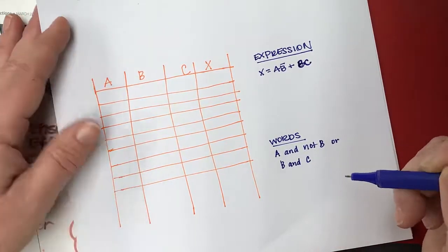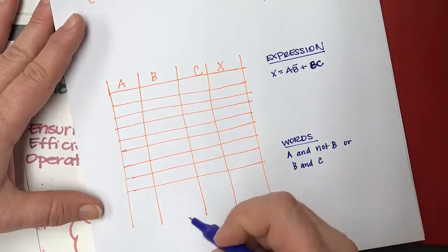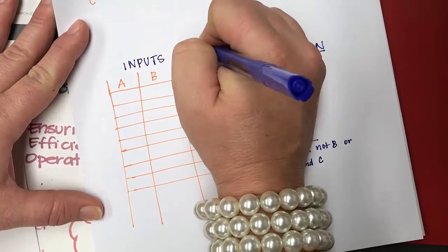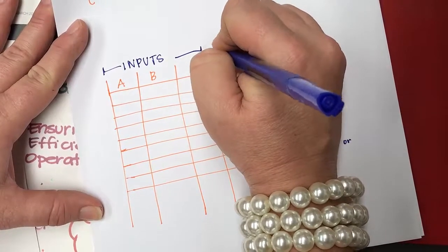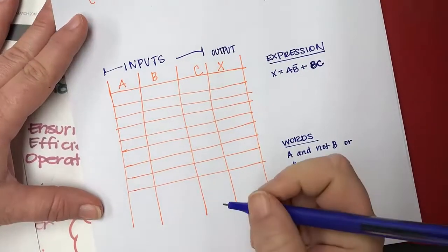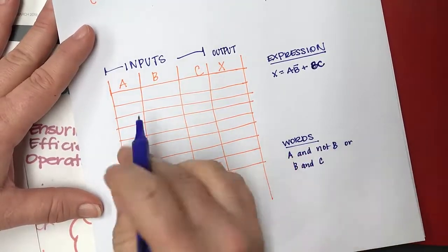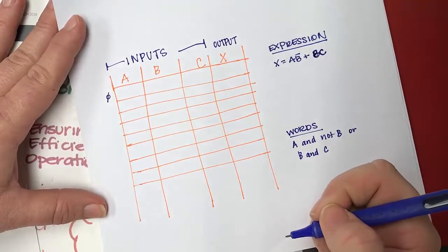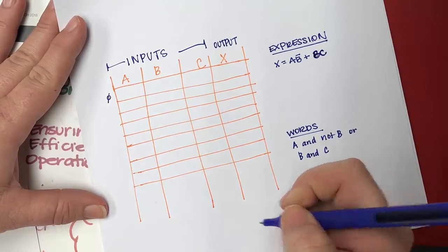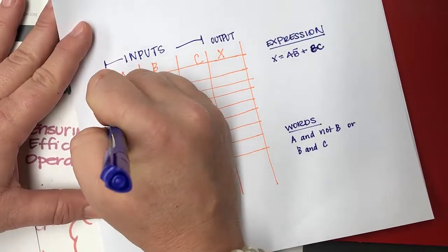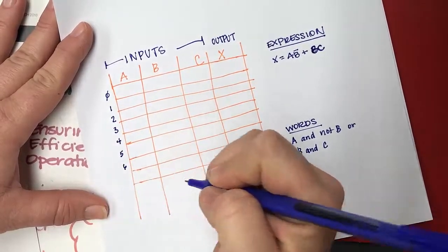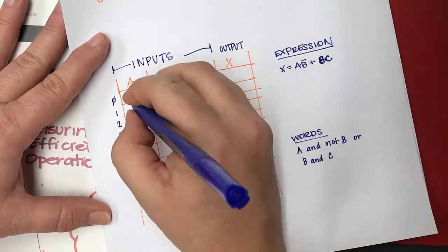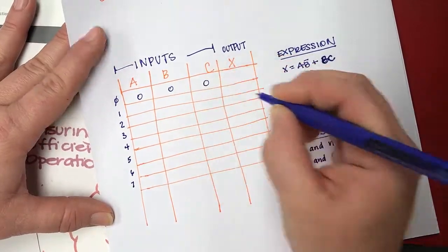I have three inputs right here and this is my output. Sometimes you have circuits with two or more outputs. In a truth table, the first line is equivalent to zero. Since we have three inputs, we're going to need eight lines — zero, one, two, three, four, five, six, seven. Always start the first line at zero, so this would be zero, zero, zero.